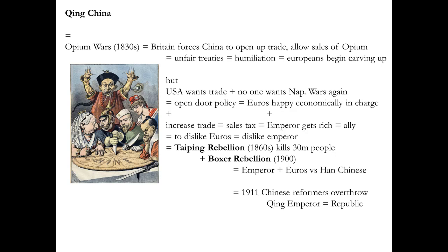The problem that Europeans needed to sell to China but the Chinese didn't want to buy European goods caused the Opium Wars. The British Empire was a drug gang — a narco state. In the 1830s, they fought a series of wars forcing China to open up trade and allow especially the sale of opium to their population.